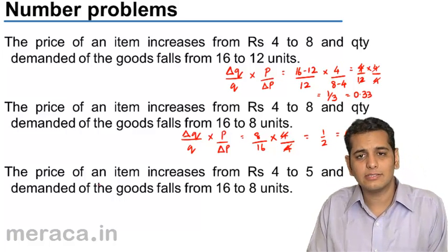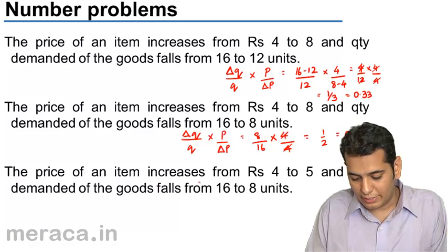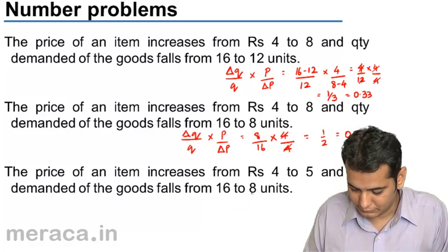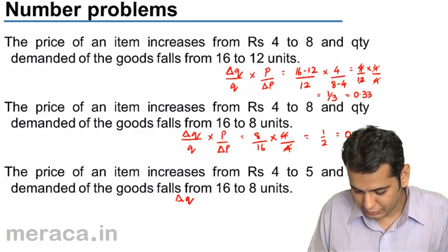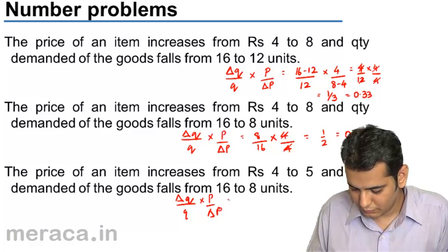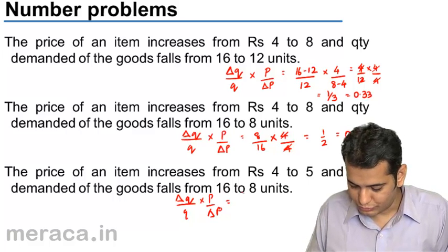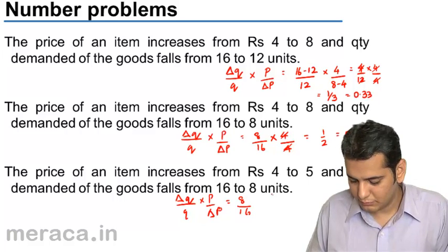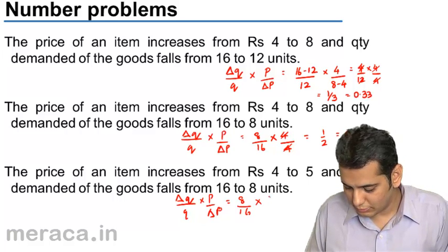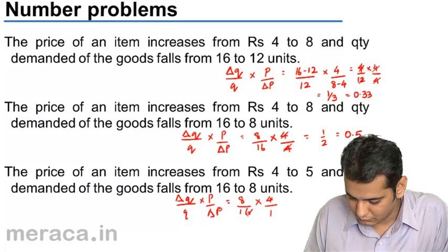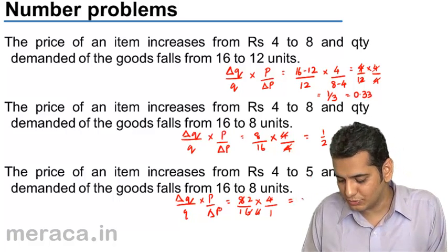The last example: the price of an item increases from 4 to 5 and the quantity demanded falls from 16 to 8. Change in quantity is 16 minus 8 = 8, original quantity is 16, original price is 4, and change in price is 5 minus 4 = 1. By solving this, we get the answer as 2.